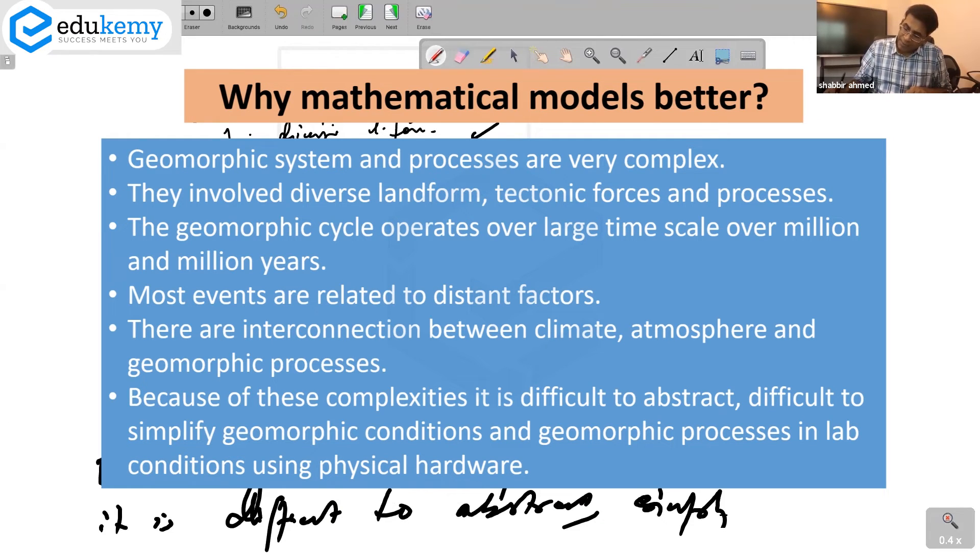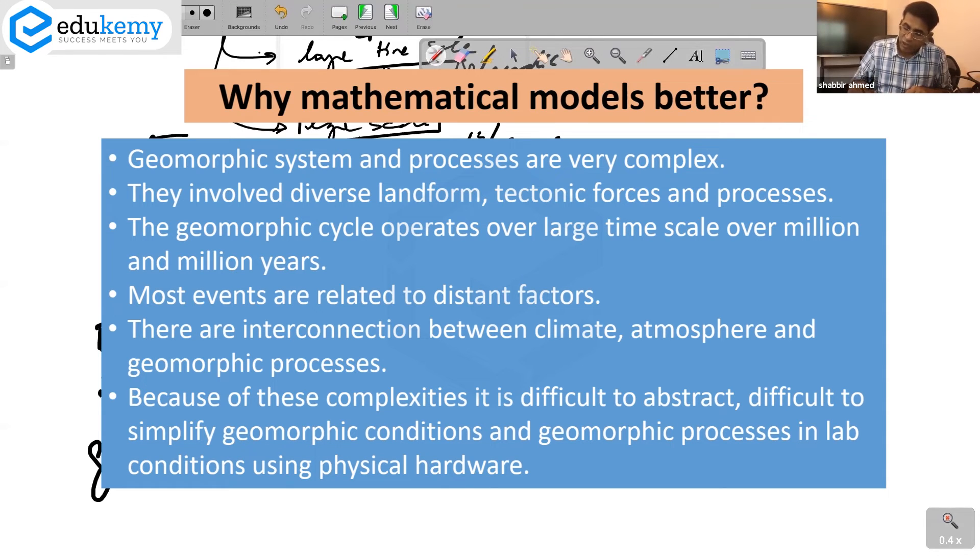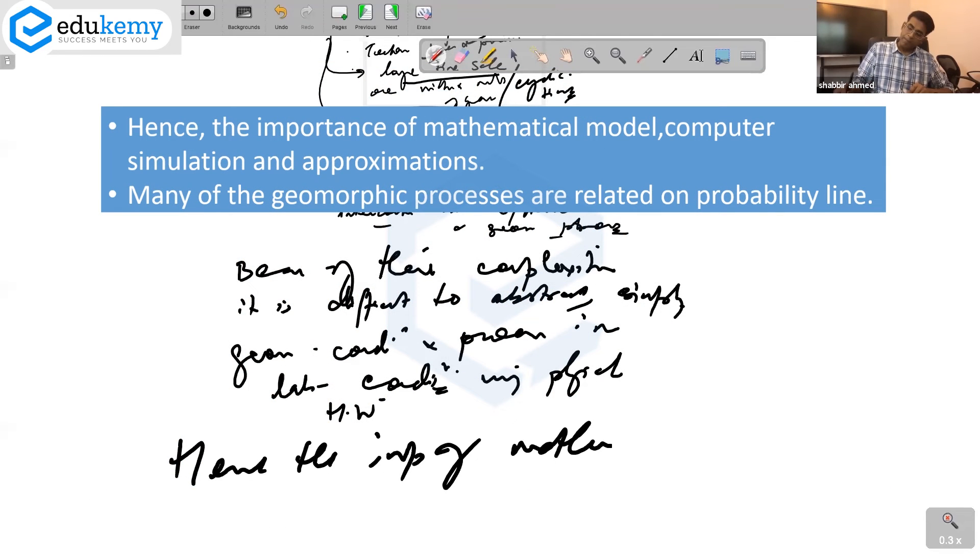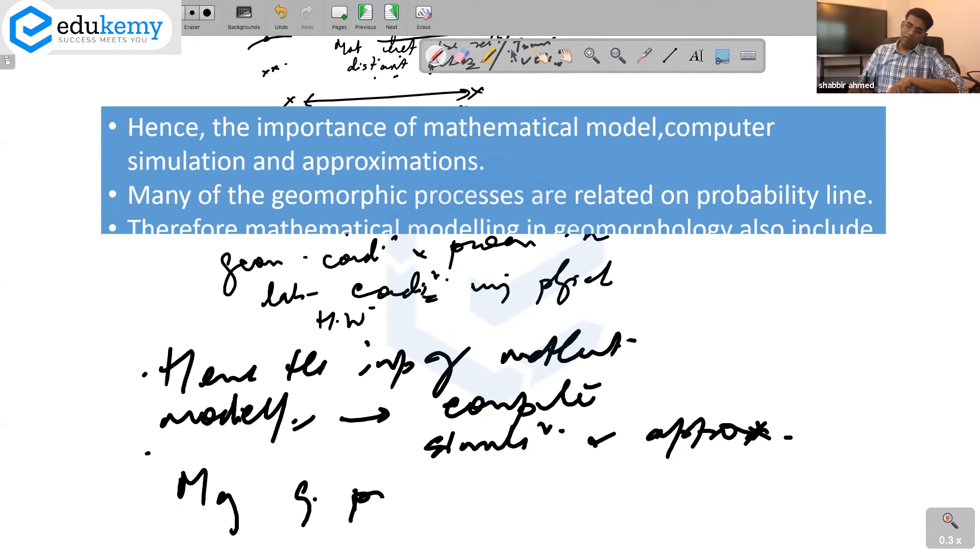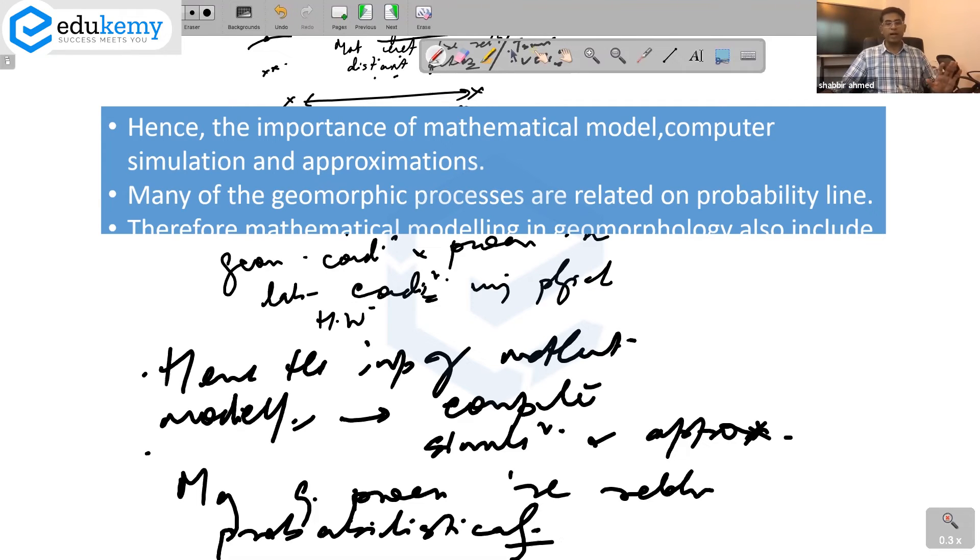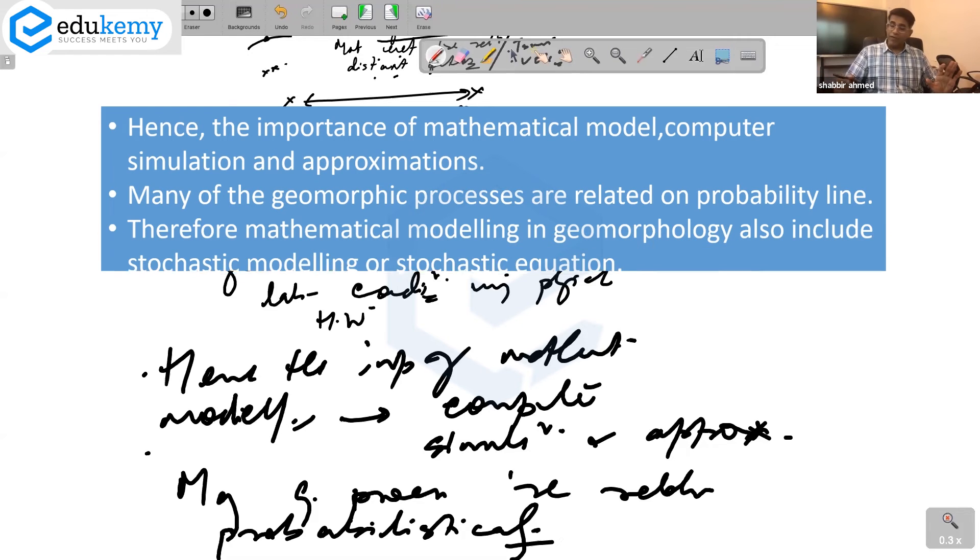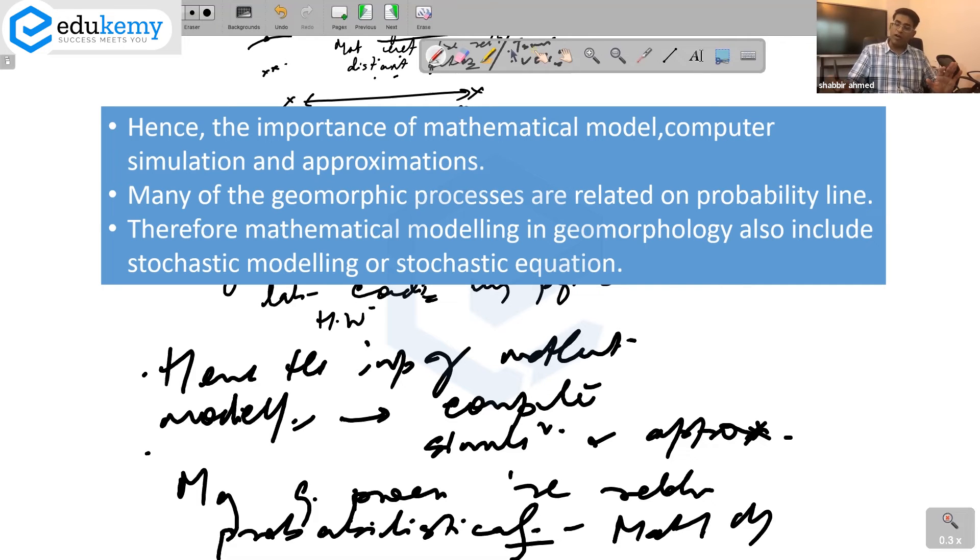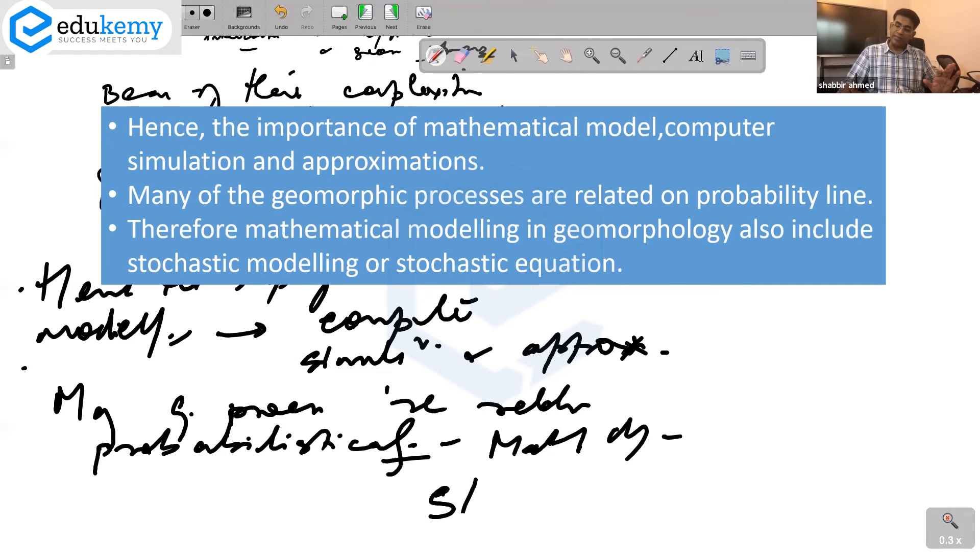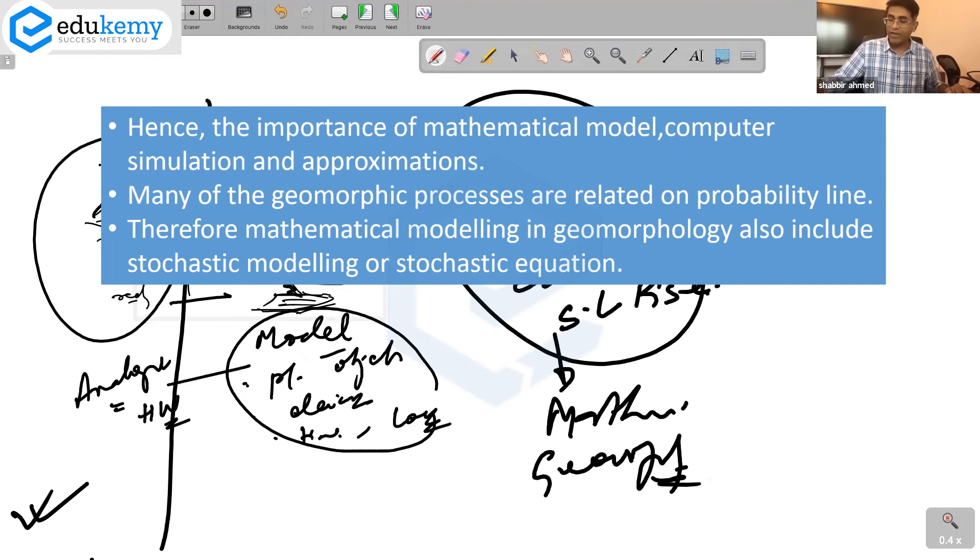Because of these complexities, it is difficult to abstract, difficult to simplify geomorphic conditions and geomorphic processes in lab conditions using physical hardware. Hence the importance of mathematical modeling, hence the importance of computer simulations and approximations. Many geomorphic processes are related probabilistically. You can never be sure about what exactly will happen. Therefore, mathematical modeling in geomorphology also includes stochastic modeling, stochastic equations. Stochastic models are based on probability.